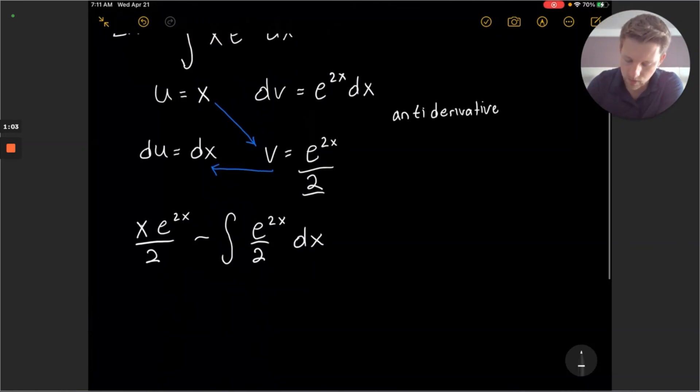Notice that the 2 here in my integral is a constant. We can move that out of the integral. And the antiderivative of e to the 2x we just took in our prior step.